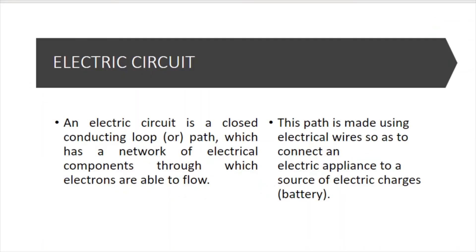Next is electric circuit. An electric circuit is a closed path which has a network of electrical components through which electrons are able to flow. For electric current to flow, there must be a closed and conducting path.